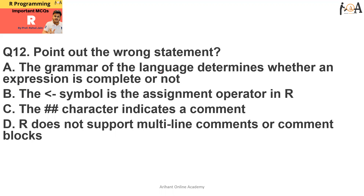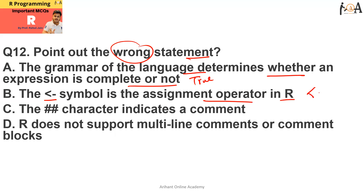Question number 12: point out the wrong statement. Option A — the grammar of the language determines whether an expression is complete or not — is a true statement, because with the help of grammar we can recognize whether any expression or statement is complete. Option B — the less-than symbol with a dash is used for the assignment operator in R — is also true, as we discussed in the previous session.